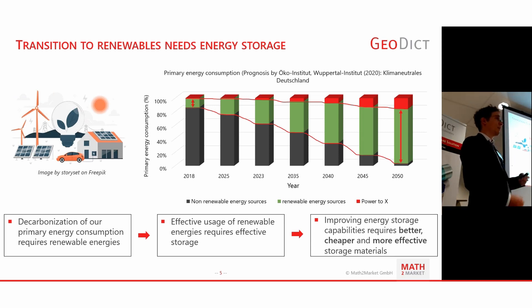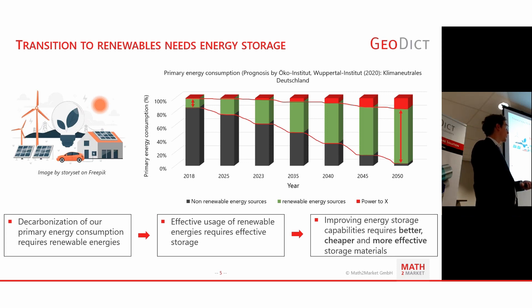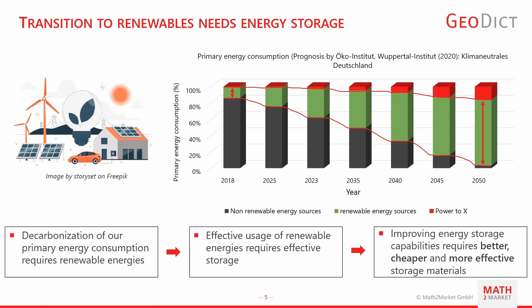First, the motivation: why are we working on electrochemical energy storage? Here you see the primary energy consumption in Germany and how it's predicted to change until 2050. We want to make the transition away from fossil fuels to renewable energy such as wind or solar, and you need to store this renewable energy. In applications such as mobility, you need batteries for this.